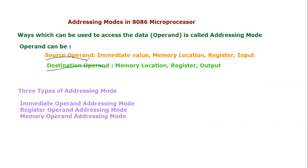Source operand can take three different categories. It can be an immediate value — that means a value which will be provided inside the instruction itself. Or it can be a memory location, or it can be a register, or it can be input. So source operand means the data source, and there are basically four possible alternatives: immediate value, memory location, register, or input.